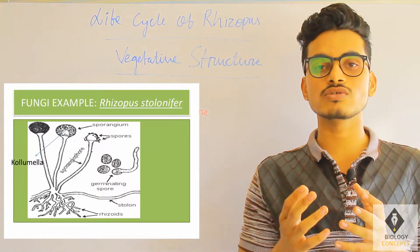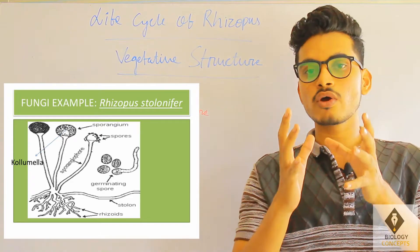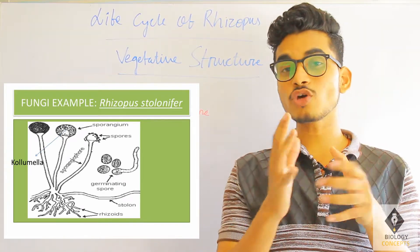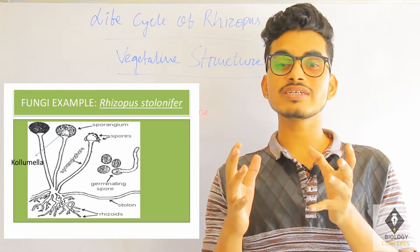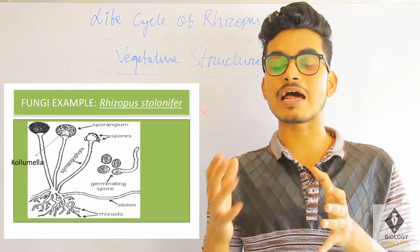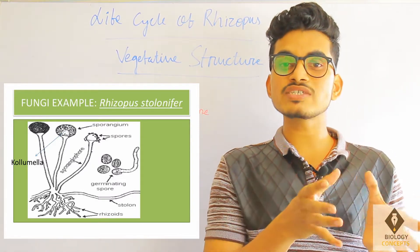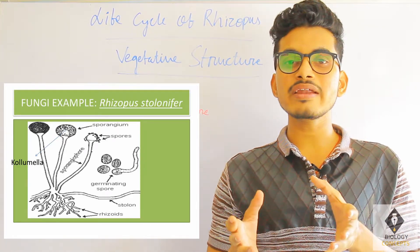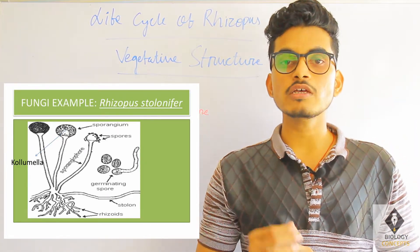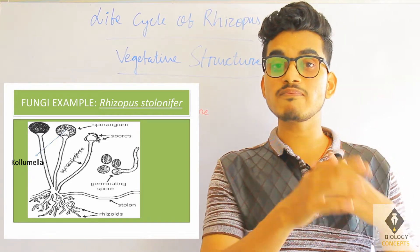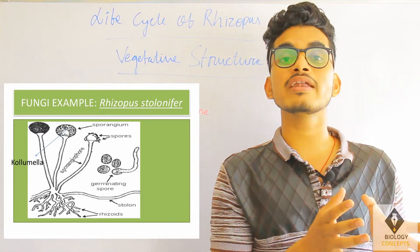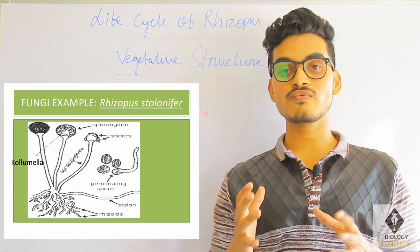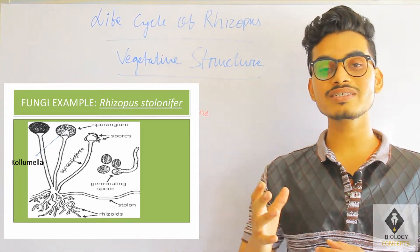Rhizoids are repeatedly branched structures which arise from the nodes of the stolons and penetrate into the substratum. The main function of rhizoids is to help in the absorption of nutrients and minerals from the soil.